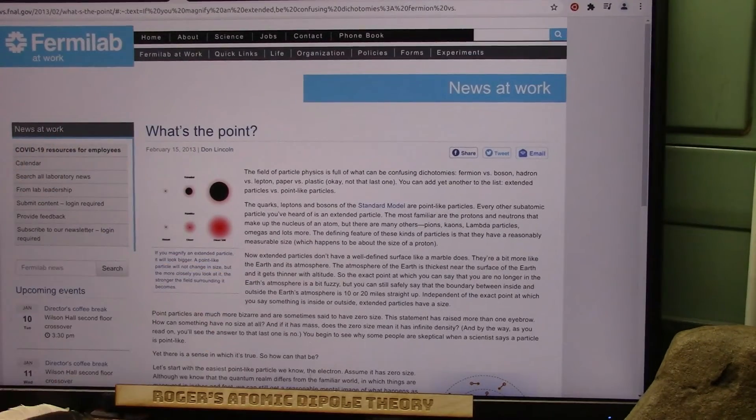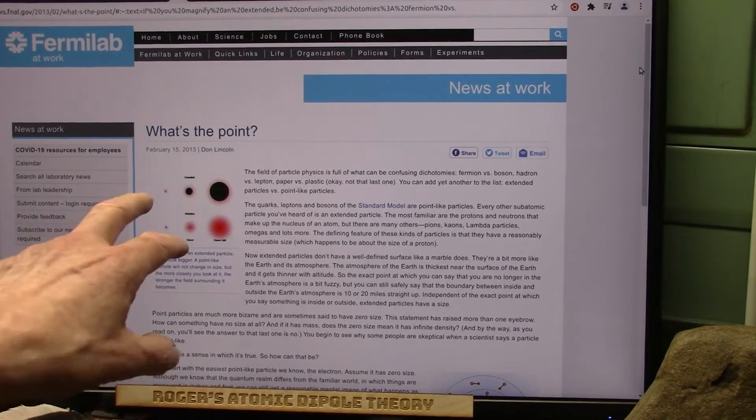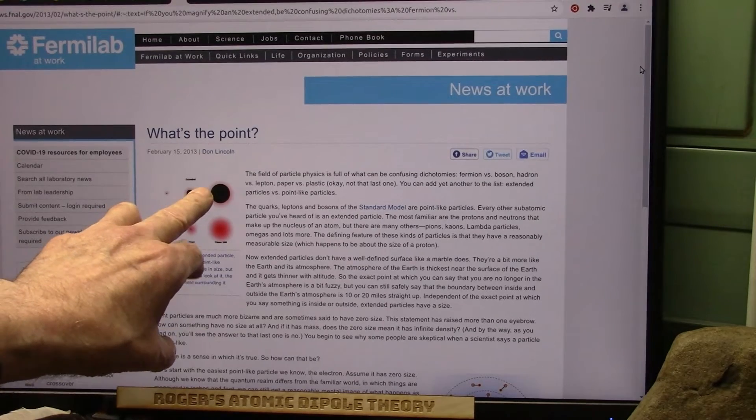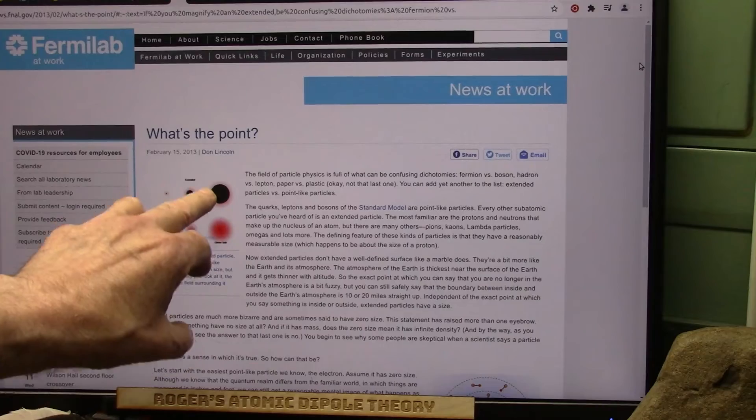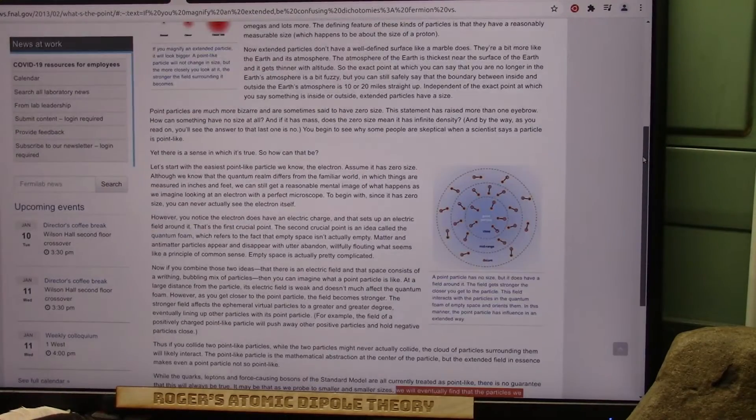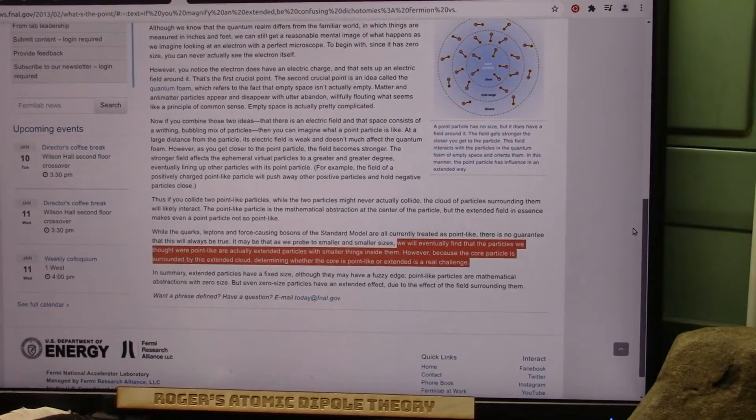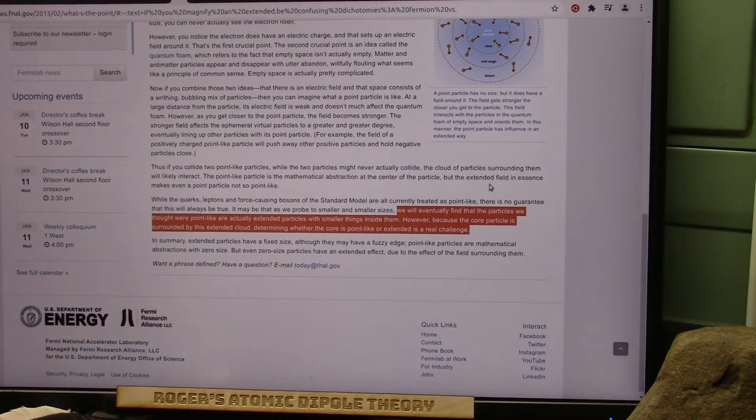So this is Don's article again. You see the extended particle, which is the fixed, and the point particle, which has no mass. That one has all the mass, and I'm surprised he didn't understand, because I showed him these same particles and how we developed them.